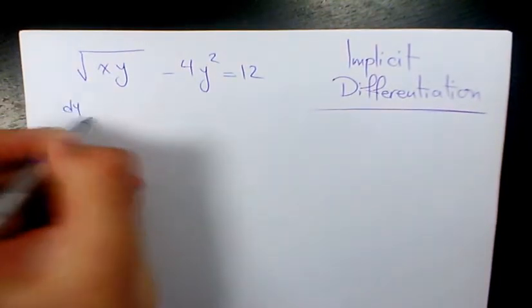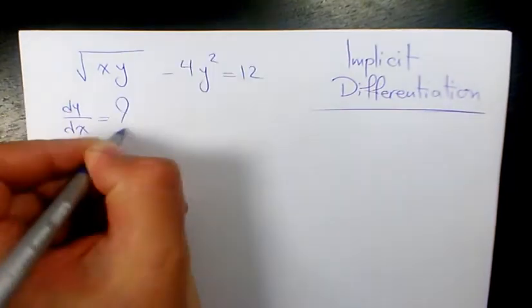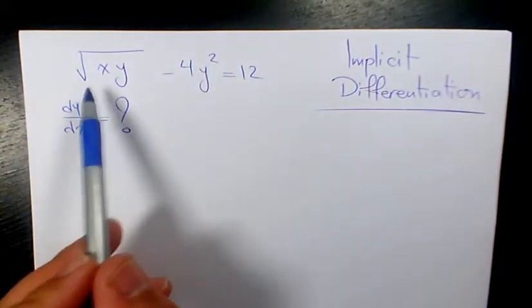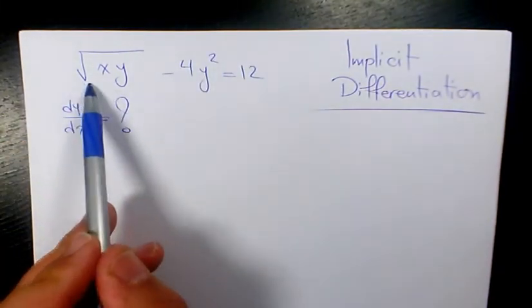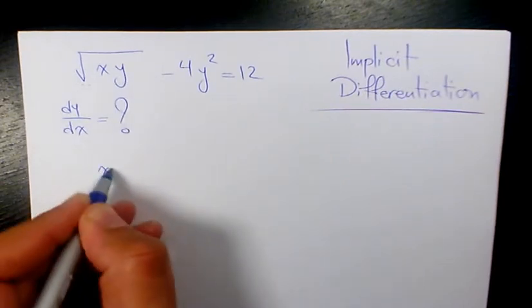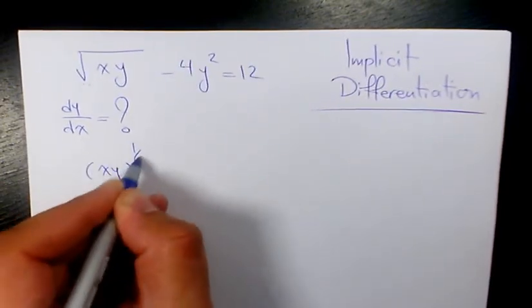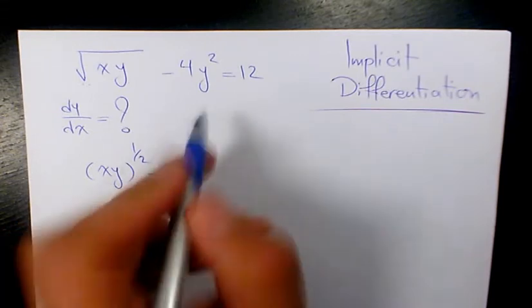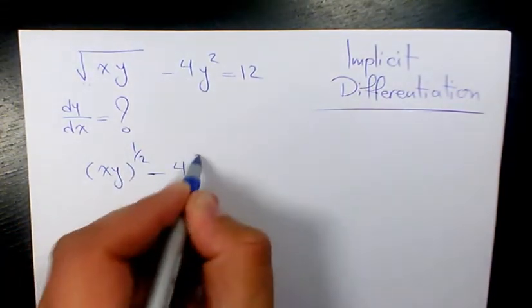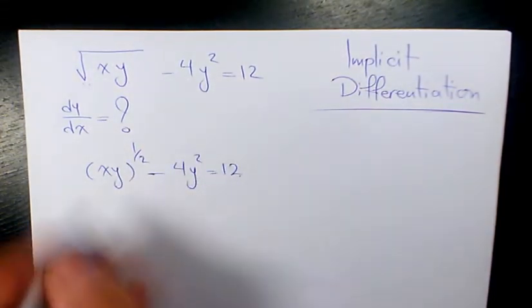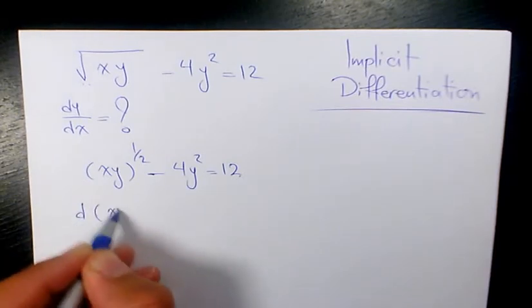Which will be dy over dx. So let's start. The first thing I'm going to do here, we have square root of xy. Instead of that, I'm going to write xy to the power of one half. That's going to be easier for differentiation, minus 4y squared equals 12.